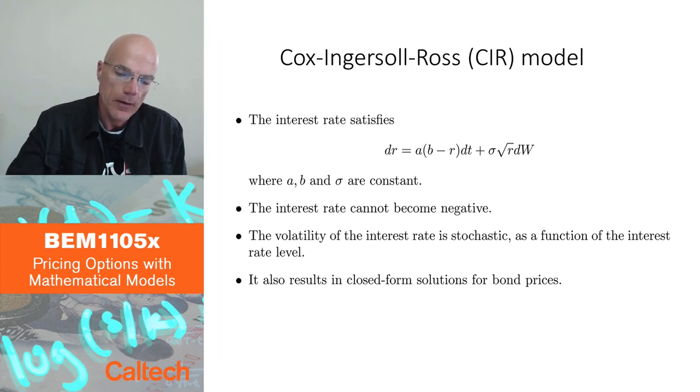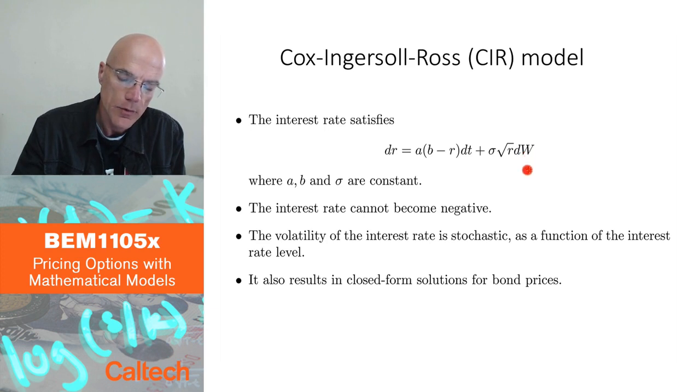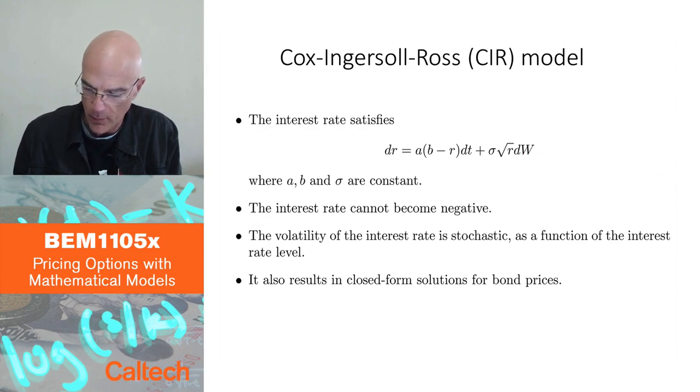All right. In effect, you're making the volatility of the interest rate stochastic, a function of the interest rate, a square root function. All right. That's the other popular model. These two are the most popular continuous time short rate models. Let me give you some more. Okay. This one has a distribution called the generalized chi-square distribution. But we don't need it.